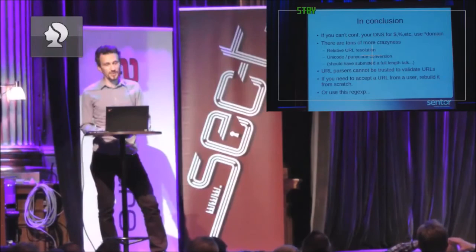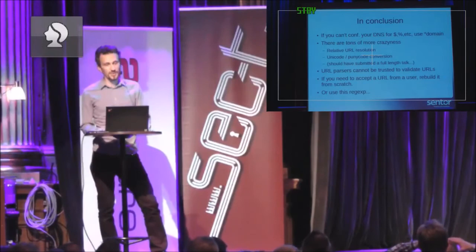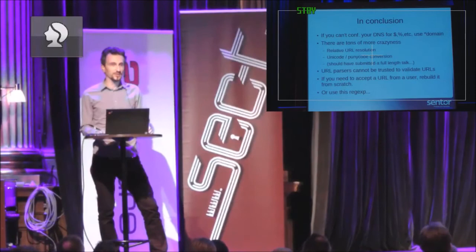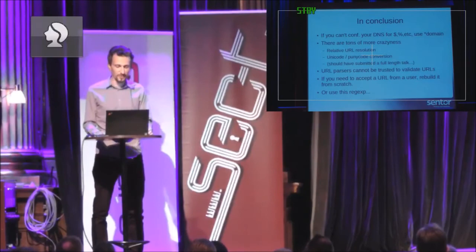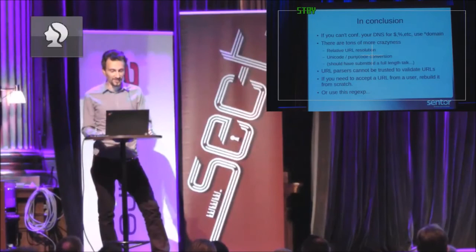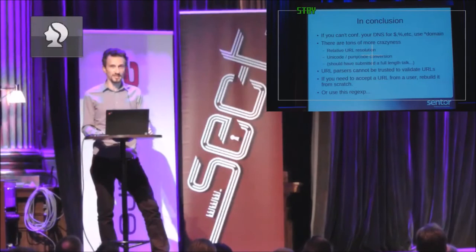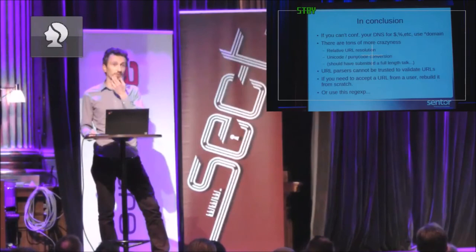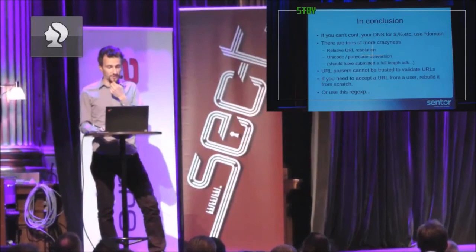Some conclusions: if you can't configure your DNS to respond to these crazy queries, just configure it to use a wildcard domain and it will respond to them anyway. I can't tell you about all the other craziness — just get into relative URL resolution or try to do some punycode conversion, which is also really hilarious. I should have submitted a full-length talk. In conclusion: URL parsers cannot be trusted to validate URLs. If you need to accept a URL from a user, you need to break it apart into tiny parts and validate each one individually to make sure they don't contain line breaks, whitespace, and crazy stuff like that. And as closing remarks, if you want to use a regular expression to validate your URLs — I went to the first hit on Stack Exchange and Googled it. Here's your regex. Try to use it. Thank you very much.